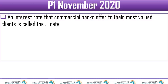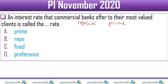Question 7: an interest rate that commercial banks offer their most valued clients is called the prime rate, also called the prime lending rate. The repo rate is wrong. Fixed rates and preference rates are wrong. Be careful — someone might choose 'preference rate' because the question mentions 'most valued clients,' but the correct answer is the prime rate.